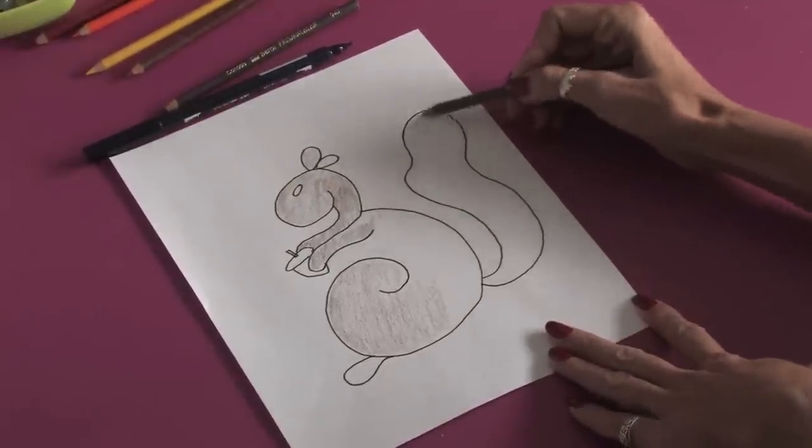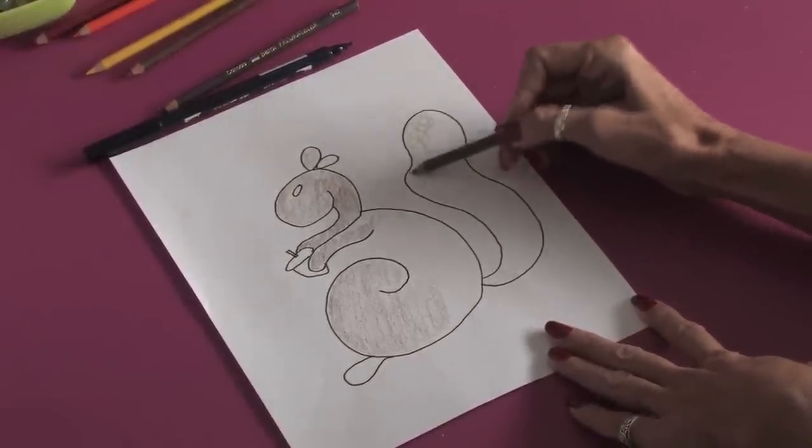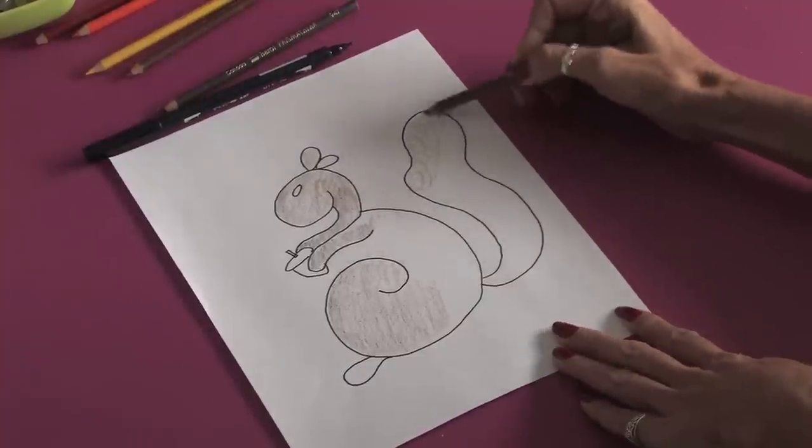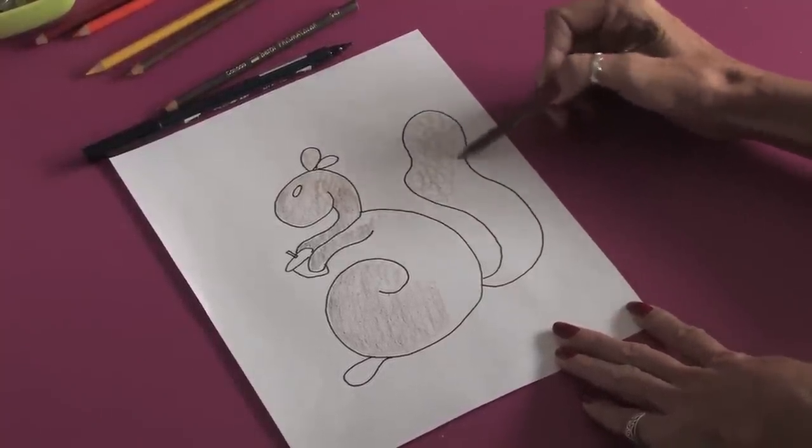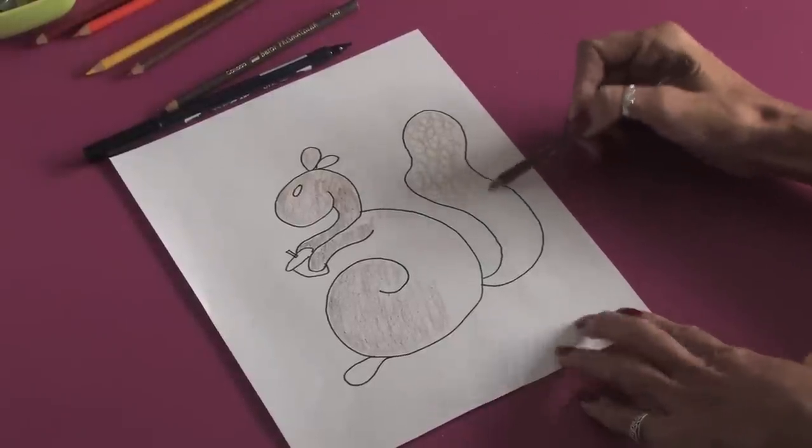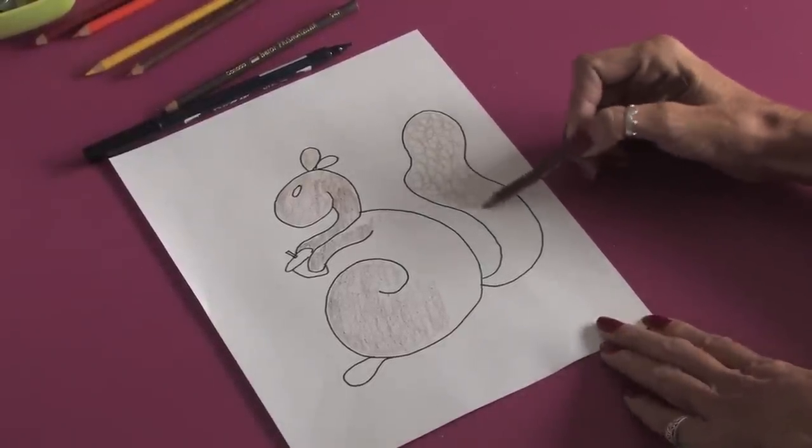I'll fill in the ears a little bit with the lighter brown. Then you can come in and do some big circles to get the bushy look in the tail. You can continue on in this fashion until the whole squirrel is filled in and you'll have a beautiful drawing of a squirrel.